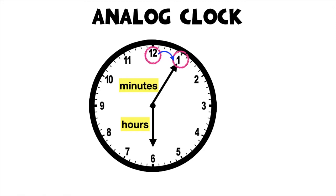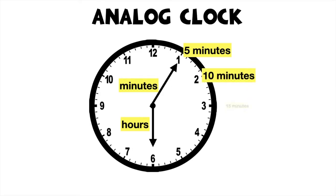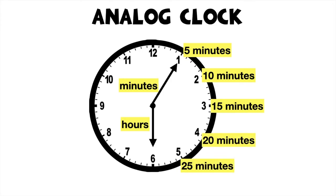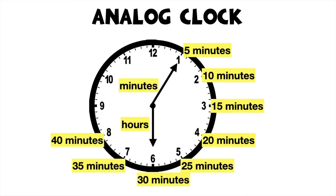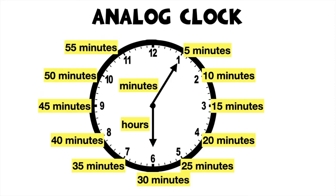Therefore, when the minute hand is pointing at 1, we read it as 5 minutes. When it is pointing at 2, 10 minutes. When 3, 15 minutes. 4, 20 minutes. 5, 25 minutes. 6, 30 minutes. 7, 35 minutes. 8, 40 minutes. 9, 45 minutes. 10, 50 minutes. 11, 55 minutes. And for 12, that is equivalent to 60 minutes, or it is o'clock. Always remember, in every one hour, we have 60 minutes in total. Is that clear, children?